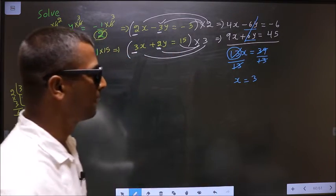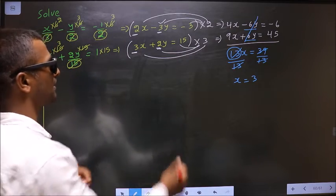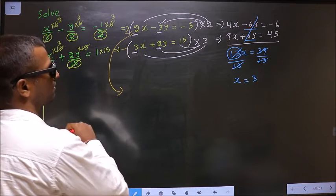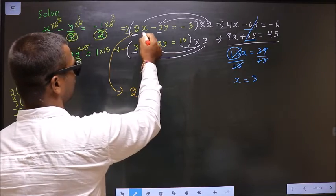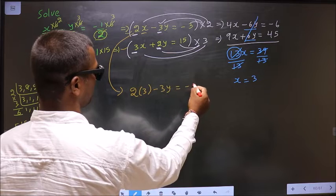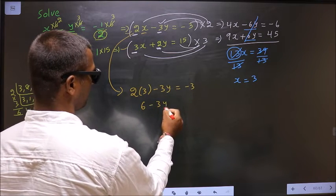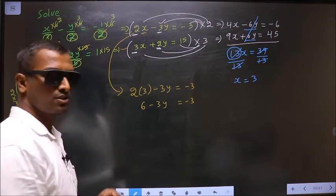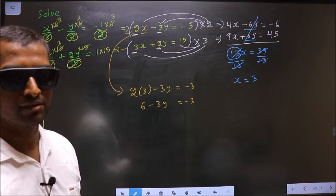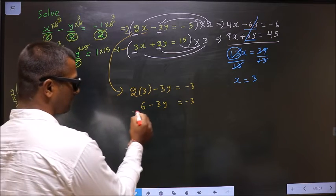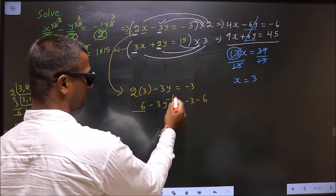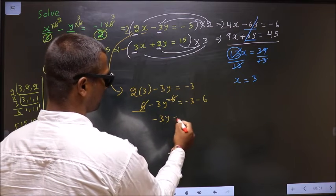Okay, now. Now to get y, replace x equal to 3 in any one of the equations. Let us say I replace in this. So what do I get? 2 in place of x, 3, minus 3y equal to minus 3. 6 minus 3y equal to minus 3. So now to get y, I should make y the subject. That means remove all the connections connected to y one by one, starting with plus 6. To remove plus 6, subtract 6 on both sides. So this cancels out. Minus 3y equal to minus 9.